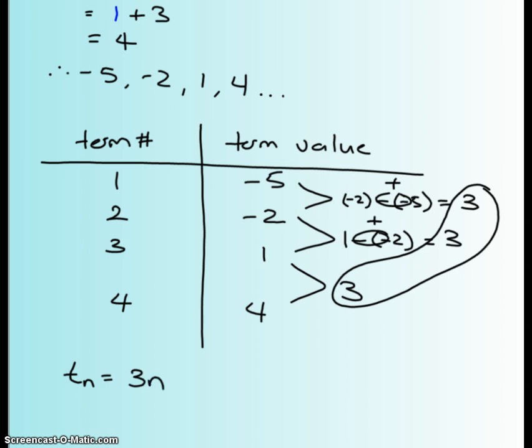It's going to go right in front of your term number. Now there's still something at the back, and I'm going to test that, because if I take my term number and I put it into my n, my term value should equal to negative 5. But that doesn't seem to be the case, because 3 times 1 is just 3.